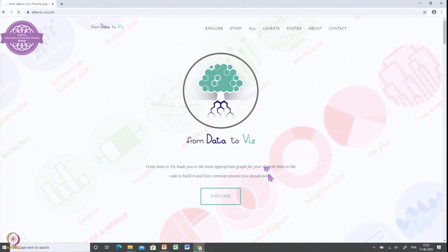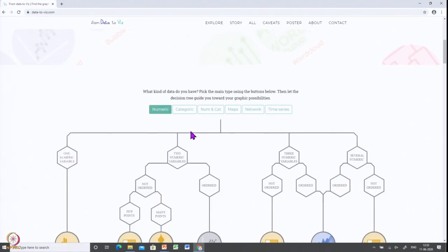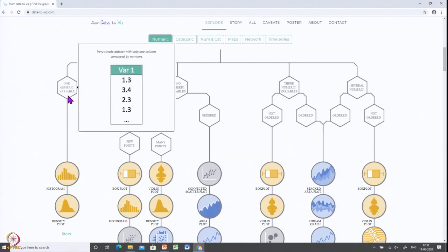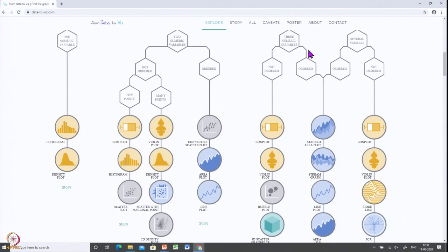When you look at data to visualization, you can explore here. You can select what type of data you have - if it is numeric data, you will see this kind of decision tree. If you have one numeric value, you can use histogram or density plot. If you have two numerical values, what kind of chart can you use? If you have three numeric values, what chart can you use? So you can select based on this chart.